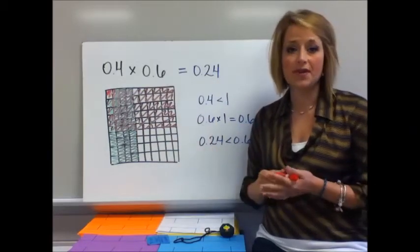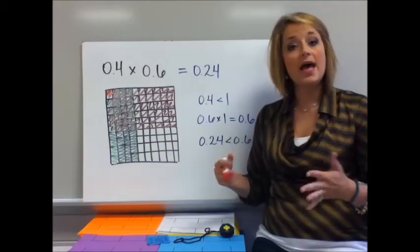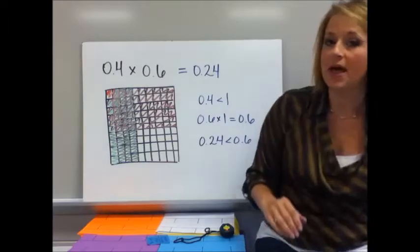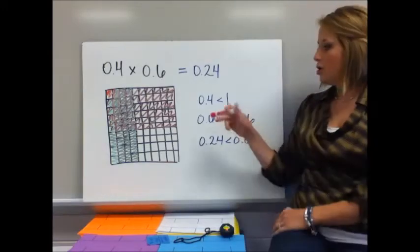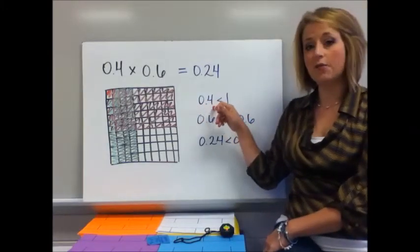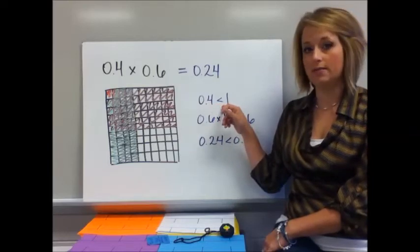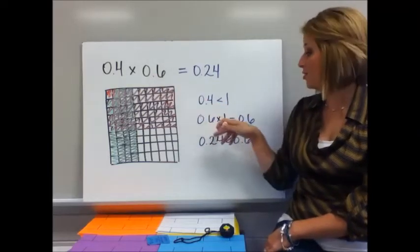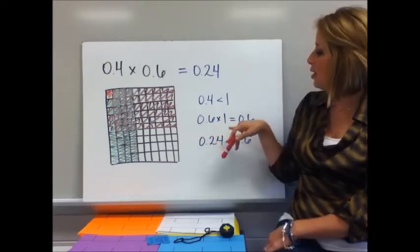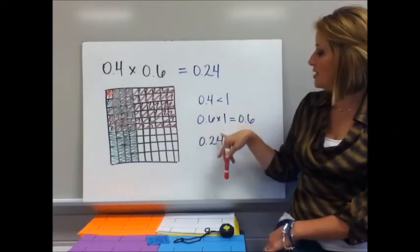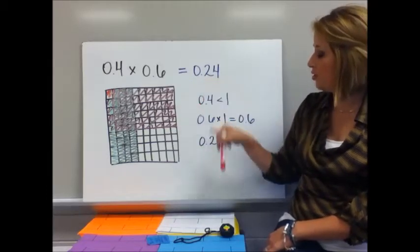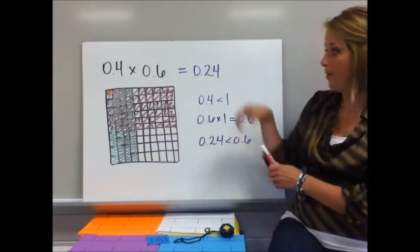Some people struggle with this because they think when numbers are multiplied, they get bigger. And in whole numbers, that's right, but it's a little bit different in decimals. Think about it this way. You would agree that 4 tenths, 0.4 is less than 1. And I know that if I multiply that 0.6, the other factor by 1, I would get 0.6. So since I am multiplying by something that's less than 1, it makes sense that the product 0.24 is less than 0.6.